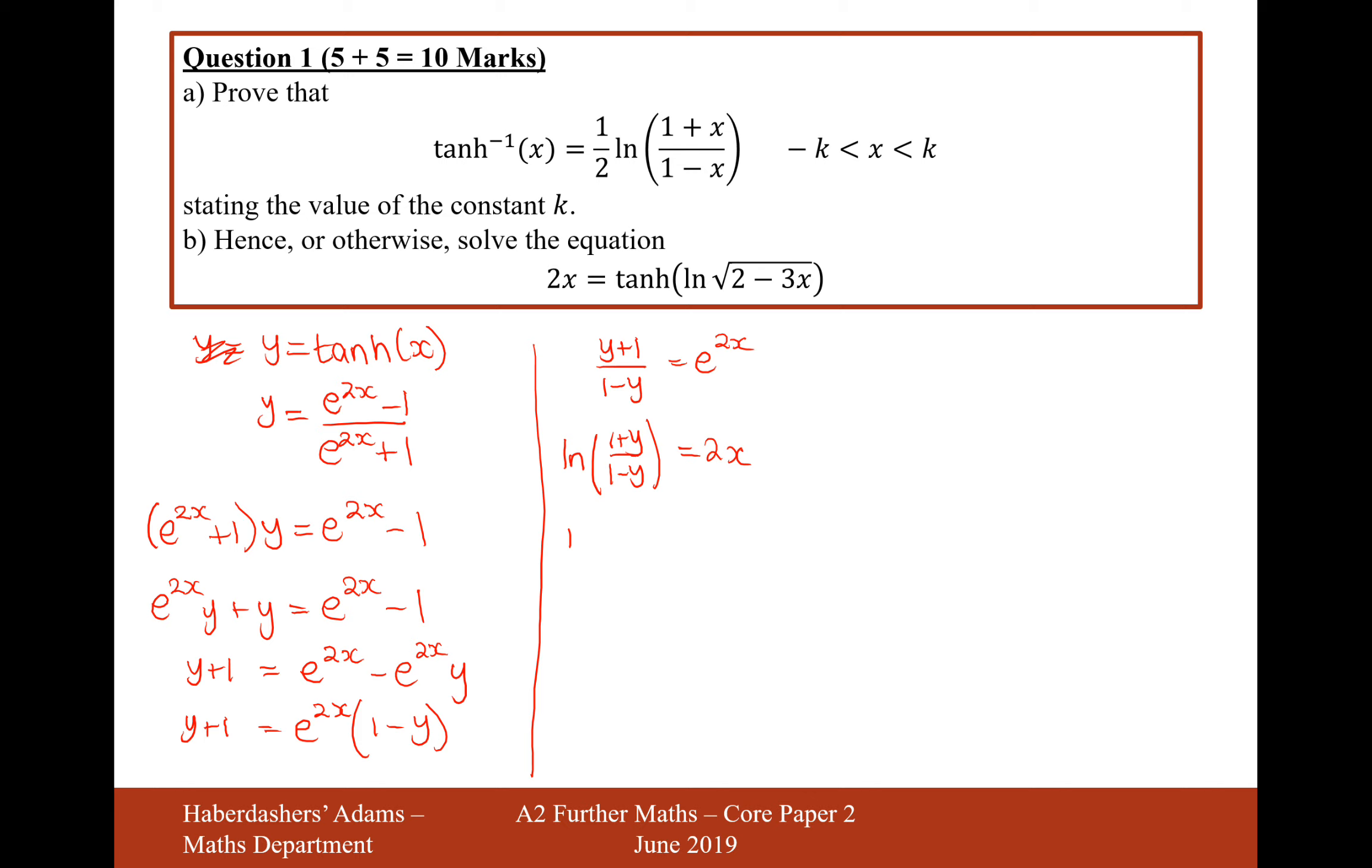So ln of 1 plus y over 1 minus y equals 2x. And then we divide by 2, so it's a half ln 1 plus y over 1 minus y equals x. So there we are.